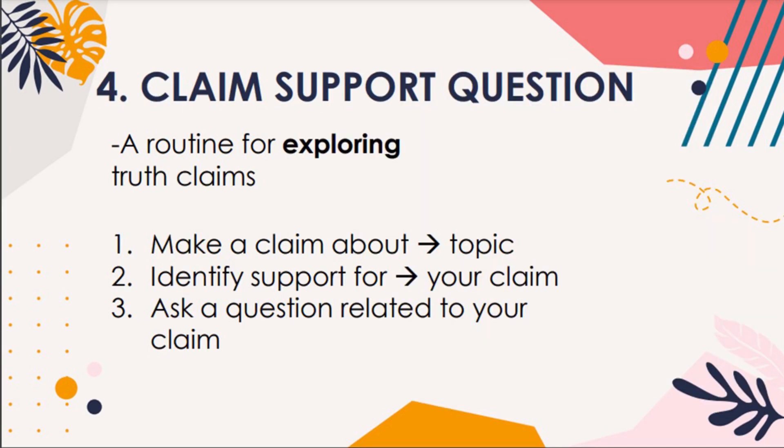Fourth among the visible thinking routines is Claim Support Question — a routine for exploring truth claims, which follows three steps. One: make a claim about the topic, issue, or idea being explored. A claim is an explanation or interpretation of some aspect of what is being examined. Two: identify support for your claim — what things do you see, feel, or know that lend evidence to your claim.